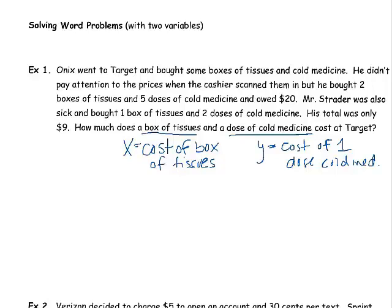So I'm going to make X stand for the cost of a box of tissues. And I'm going to make Y stand for the cost of one dose of cold medicine. Notice I didn't just say X equals tissues and Y equals cold medicine. Because there's lots of things that we could be talking about, like how many of them they bought, the number of tissues, the number of doses. But this time we want to know about the cost. So let's go back and see what we know. Onyx bought two boxes of tissues, five doses of cold medicine, owed $20. So normally, if we knew the cost of the tissues, we would say two boxes of tissues times the cost, which we don't know. So I'm going to put X, plus five doses of cold medicine times the cost of each of those, which we're going to call Y, adds up to 20.